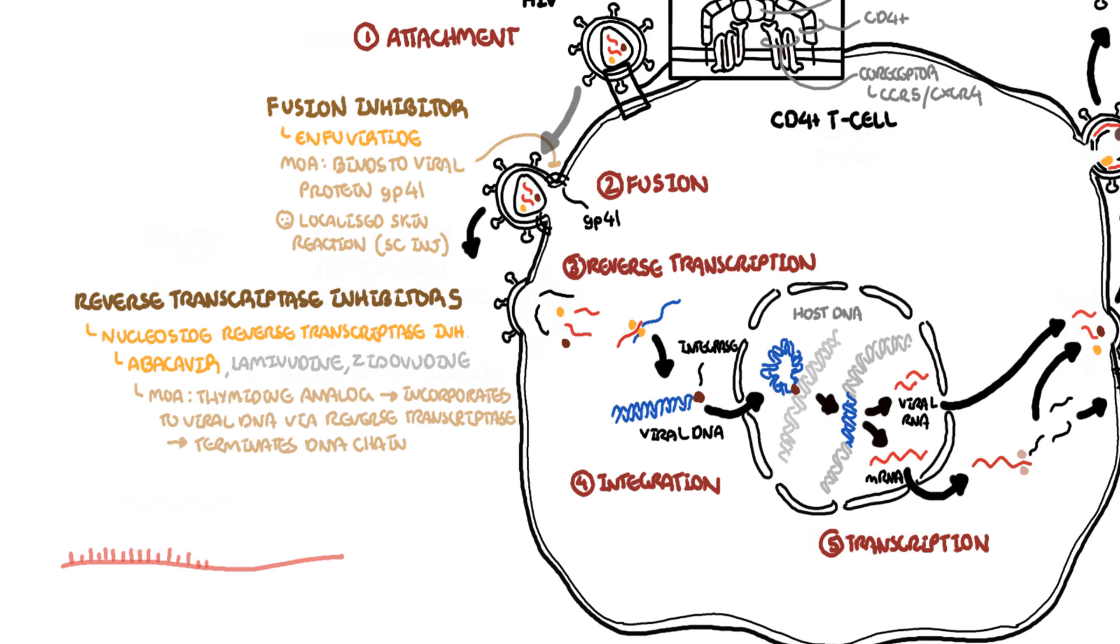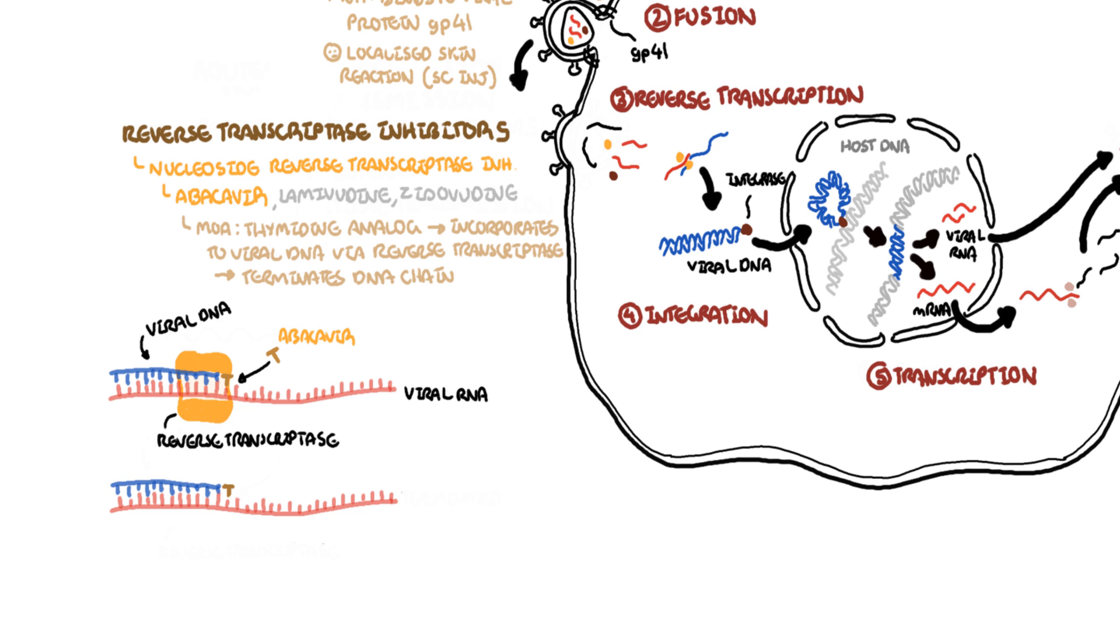Here you have the single viral RNA. The reverse transcriptase helps create the viral DNA. Nucleoside reverse transcriptase inhibitors such as abacavir acts as a thymine analogue, disrupting this whole process, terminating the strand early.